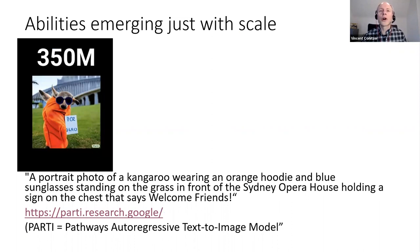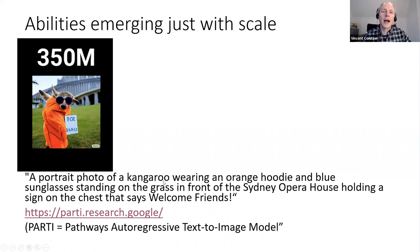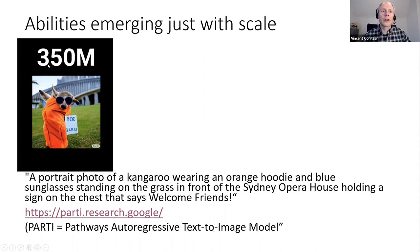The reason people are worried is that things the system currently doesn't do very well might actually start to work very well. Here's a nice example in a text-to-image context — not just a large language model by itself, but producing images. This is based on Google's Parti model, and a nice thing they did was show how the same techniques work on models of different sizes. At 350 million parameters the prompt was: generate a portrait photo of a kangaroo wearing an orange hoodie and blue sunglasses, standing on the grass in front of the Sydney Opera House, holding a sign that says 'Welcome Friends.'